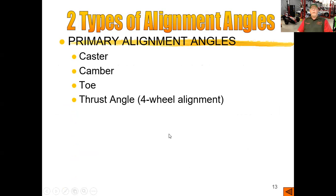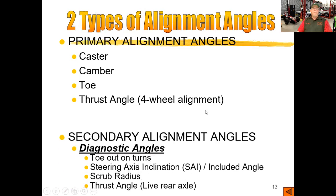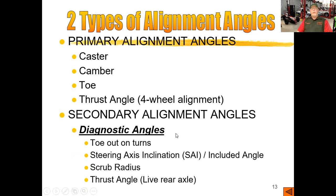The primary alignment angles that we can adjust are caster, camber, toe, and thrust angle on a four-wheel alignment — so we can actually adjust the thrust angle, which has to do with adjusting the rear wheels. The secondary alignment angles are the diagnostic angles, where we can locate a bent component or something like that on a vehicle: toe out on turns, steering axis inclination or included angle, scrub radius, and thrust angle on a live rear axle such as a pickup truck where there are no adjustments. If that's off, something bad has happened — the axle is bent, the springs or bushings are bad, or someone put the springs on wrong. There's definitely some kind of physical problem with the vehicle.